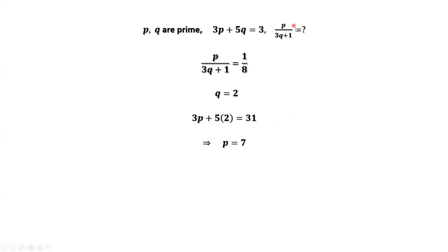From this expression, we replace Q by 2, P by 7. 1 is the final answer for P over 3Q plus 1.